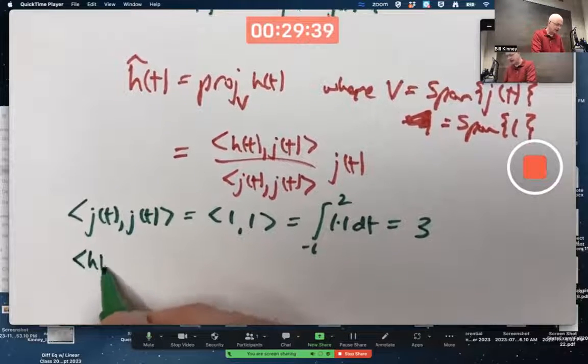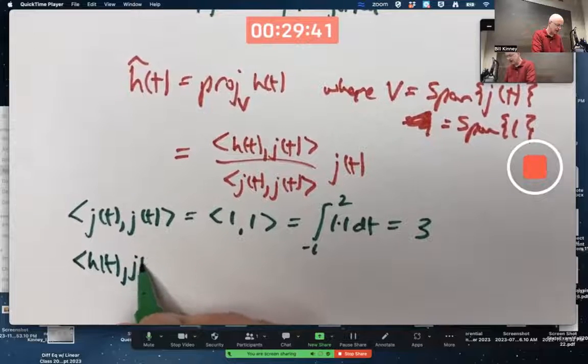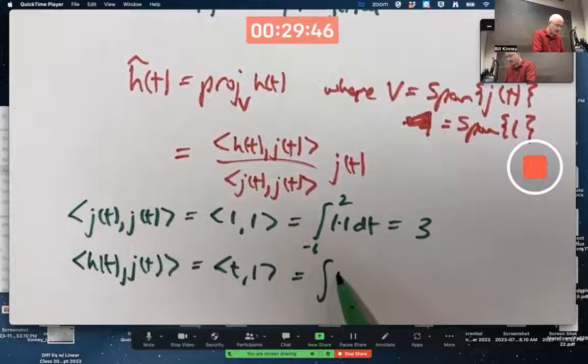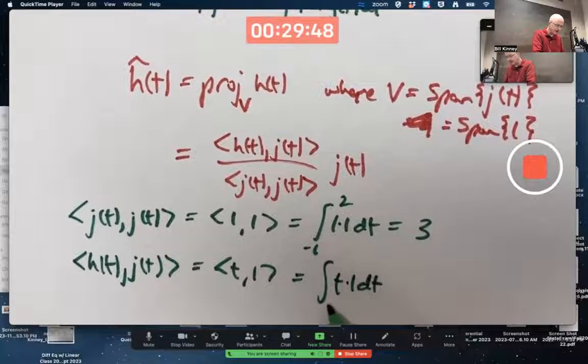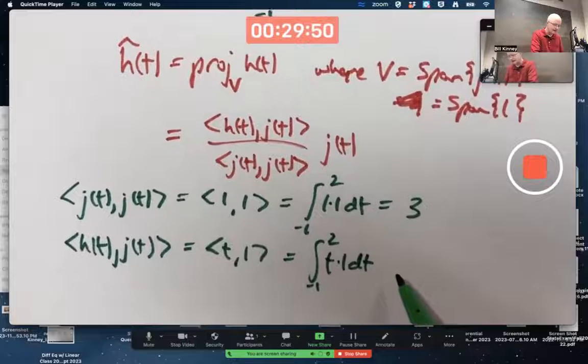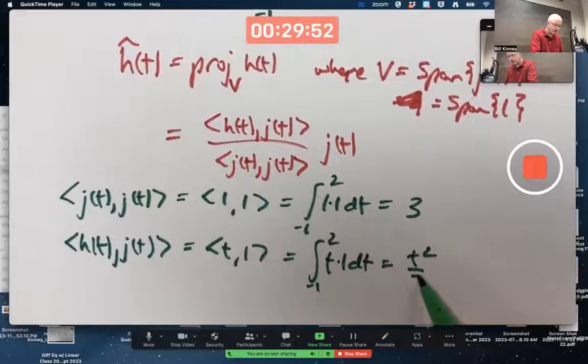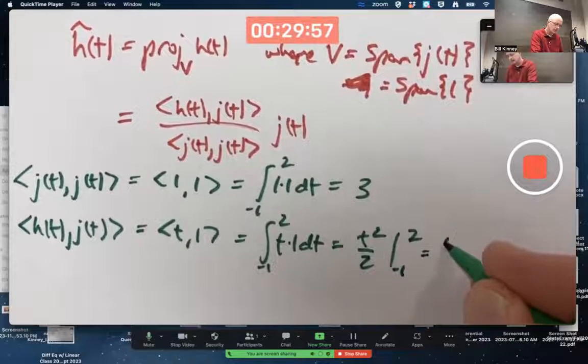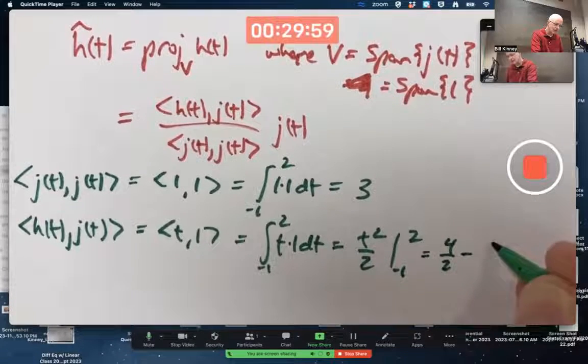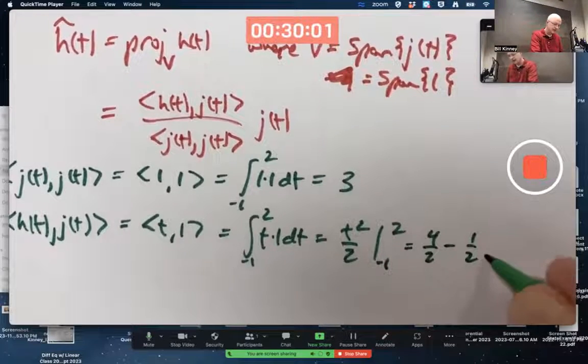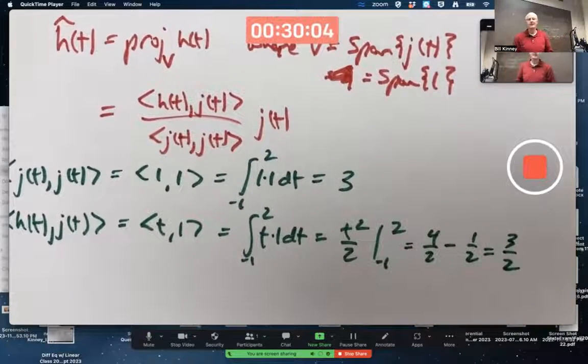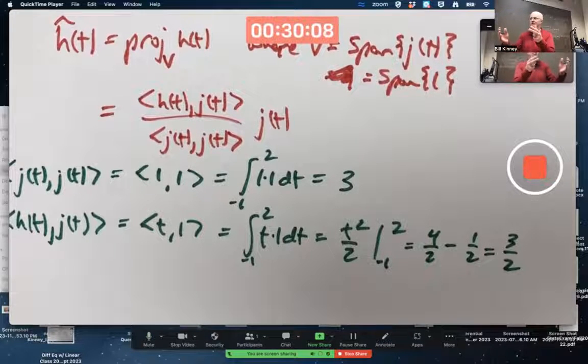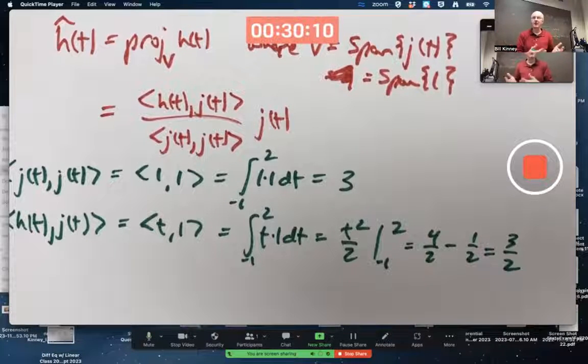What about the inner product of H with J? T with one. I got to integrate T times one from negative one to two. Get T squared over two from negative one to two. That'll be four over two minus one over two. Three halves, if I haven't made a mistake. Just like dot products give you numbers, the dot product of two vectors is a number. The inner product of two functions is a number.